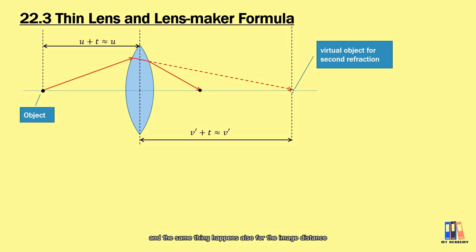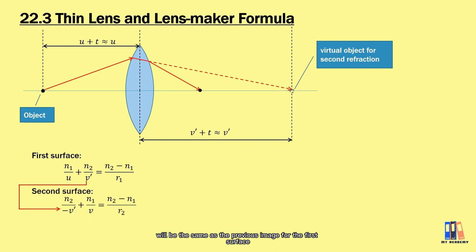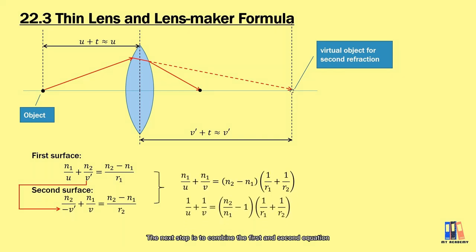The derivation here will be similar to the previous one, except that object distance for the second surface will be the same as the previous image for the first surface. The first image also becomes the virtual object for the second surface. So it is equal to negative v prime. The next step is to combine first and second equation. And finally, we have this equation.